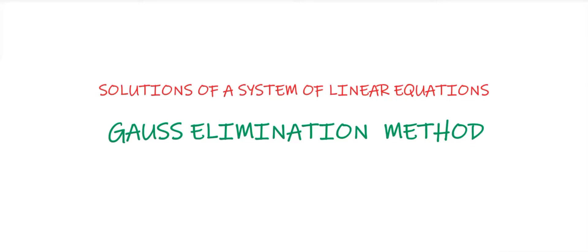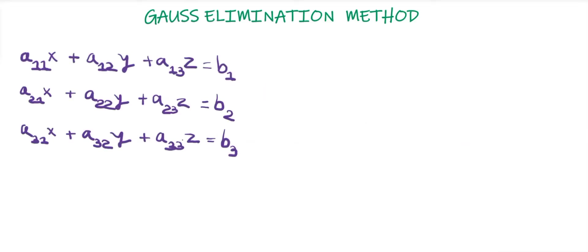Today we will see examples based on the Gauss elimination method. First, let's understand what the Gauss elimination method is. Suppose we have a system of equations: a11·X + a12·Y + a13·Z = b1, a21·X + a22·Y + a23·Z = b2, a31·X + a32·Y + a33·Z = b3.